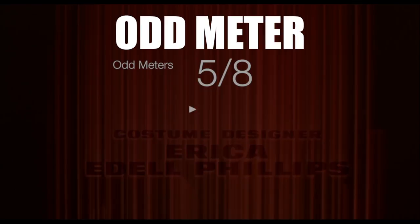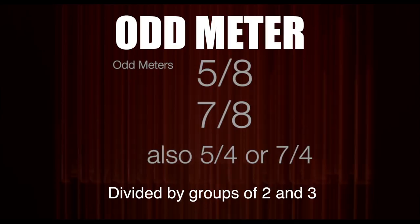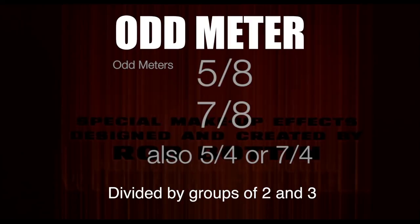But then we get to the odd meters. The odd meters are the 5/8s, the 7/8s, or it could be 5/4 or 7/4. But generally speaking, it's the way that the dance — the way that it moves, the pulses — kind of creates a not-as-common feel.